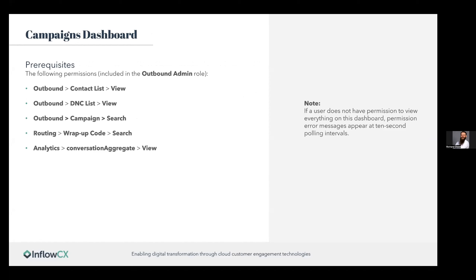Campaign dashboards require different prerequisites since this is a different type of dashboard — ideal for campaigns only. You'll need: Outbound Contact List View, Outbound DNC List View, Outbound Campaign Search, Routing Wrap-up Code Search, and Analytics Conversation Aggregate View. If a user doesn't have permission to view everything on the dashboard, a permission error message will appear. Make sure all of these are enabled.